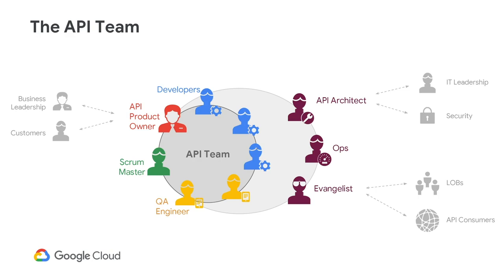This means the API team should be largely self-sufficient with as few dependencies as possible. Here's what the agile API team would look like. The core API team is in the middle, with one team made up of the API product owner, API developers, QA engineers, and scrum master in the inner ring.